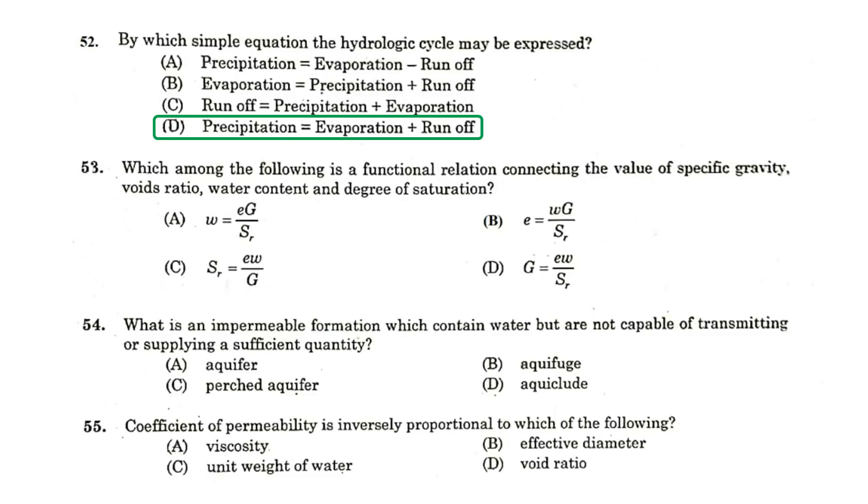Which among the following is a functional relation connecting the value of specific gravity, void ratio, water content and degree of saturation? e is equal to Wg by Sr. What is an impermeable formation which contain water but are not capable of transmitting or supplying a sufficient quantity? It is called as aquiclude. Coefficient of permeability is inversely proportional to which of the following? Viscosity.